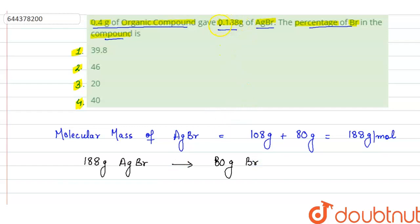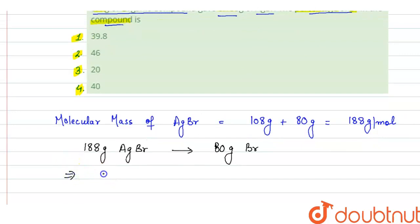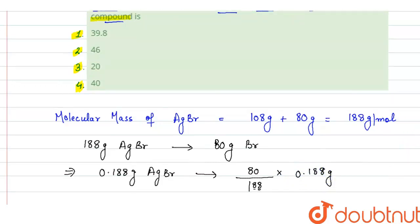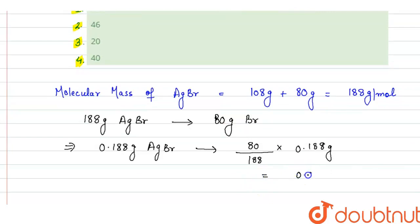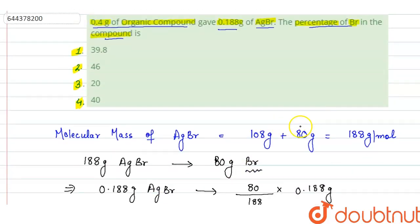Now in product, we are getting 0.188 gram of AgBr. So in 0.188 gram of AgBr, bromine will be equal to 80 divided by 188 multiplied by 0.188 gram. So it comes out to be 0.08 gram. So it means we are getting 0.08 gram of bromine in product, so there will be 0.08 gram of bromine in organic compound.